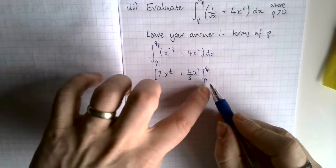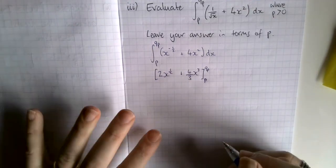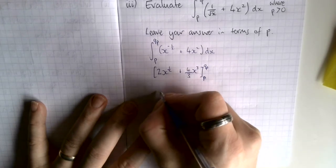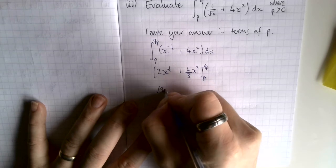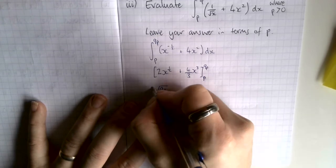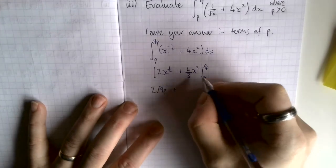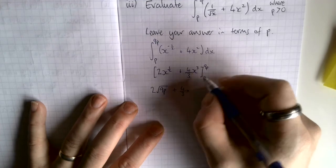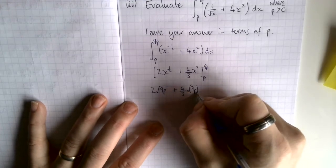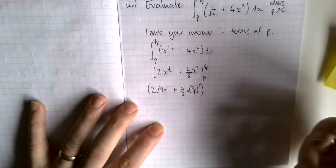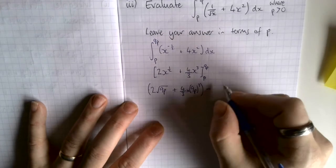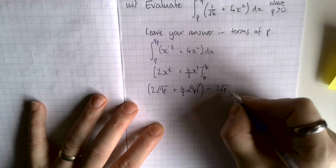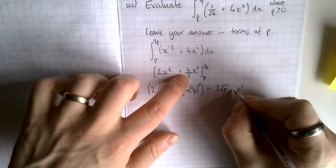Substituting 9p in: that gives 2 times the square root of 9p, plus 4/3 times (9p) cubed. Then in brackets, subtracting what we get when we substitute p: 2 times root p plus 4/3 times p cubed.